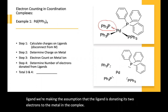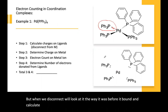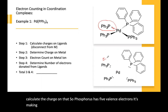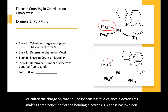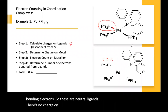When we disconnect, we look at it the way it was before it bound and calculate the charge. Phosphorus has five valence electrons, it's making three bonds — half of the bonding electrons is three — and it has two non-bonding electrons. So these are neutral ligands. There's no charge on this coordination complex, so we must assume that the overall metal must be neutral.